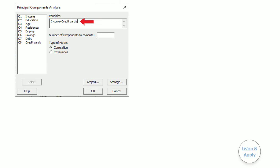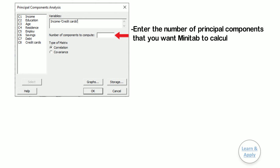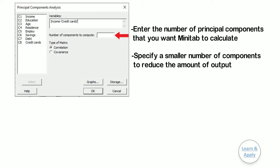Step 4: In the number of components to compute, keep the field blank. Here, enter the number of principal components that you want Minitab to calculate. If you have a large number of variables, you may want to specify a smaller number of components to reduce the amount of output. If you do not know how many components to enter, you can leave this field blank. Step 5: In type of matrix, keep the default selection of correlation as it is.